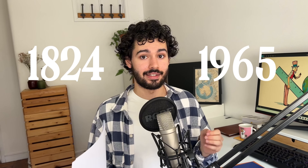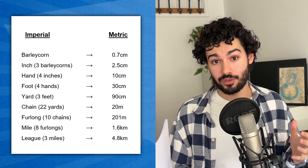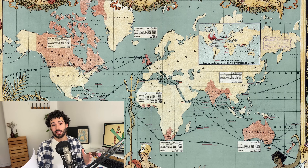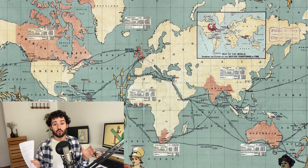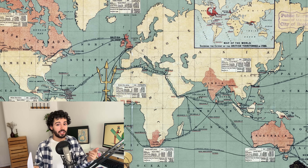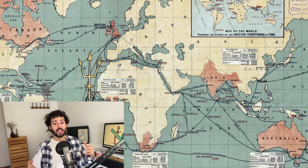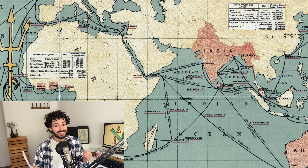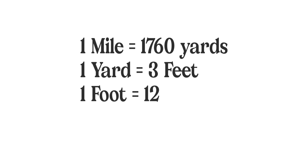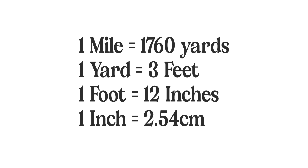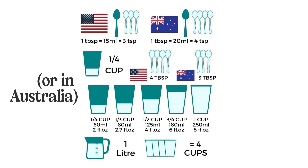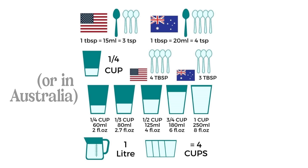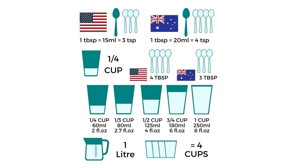The imperial system got its name from the British Empire, where it was widely used from 1824 until 1965. The British Empire had provinces all over the world using their own ways to measure things — sometimes even using the same terms differently, like a pound in the UK being different from a pound in South Africa — so they created a unified system to standardize all those values, which perhaps explains its strangeness. For instance, one mile equals 1,760 yards, one yard equals three feet, and one foot equals twelve inches, where one inch equals 2.54 centimeters. There are also key differences between the US and UK versions: one cup is 240 milliliters in the US but 250 milliliters in the UK.